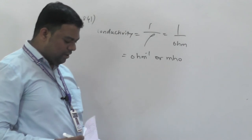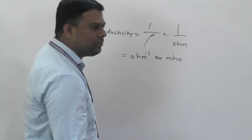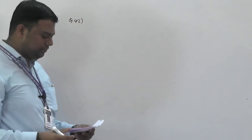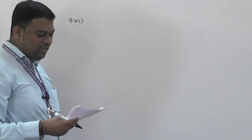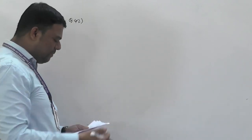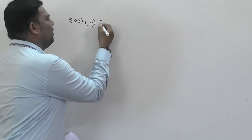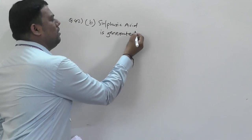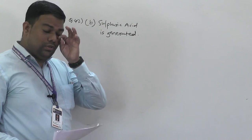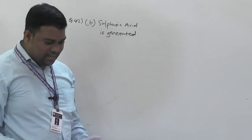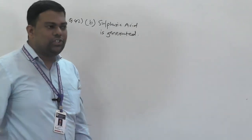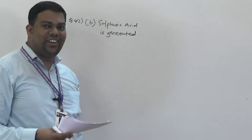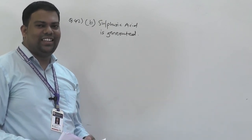Question number 42: when a lead storage battery is charged, sulfuric acid (H₂SO₄) is generated. In the lead storage battery reactions, H₂SO₄ is produced during charging at both anode and cathode.